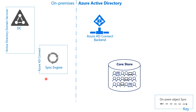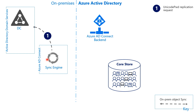The box here is the machine running on-premises called Azure AD Connect. Azure AD Connect is an umbrella of components that are installed, and one of them happens to be the synchronization engine. The first thing the sync engine does is send a replication request using the same Active Directory replication protocol to the domain controller.